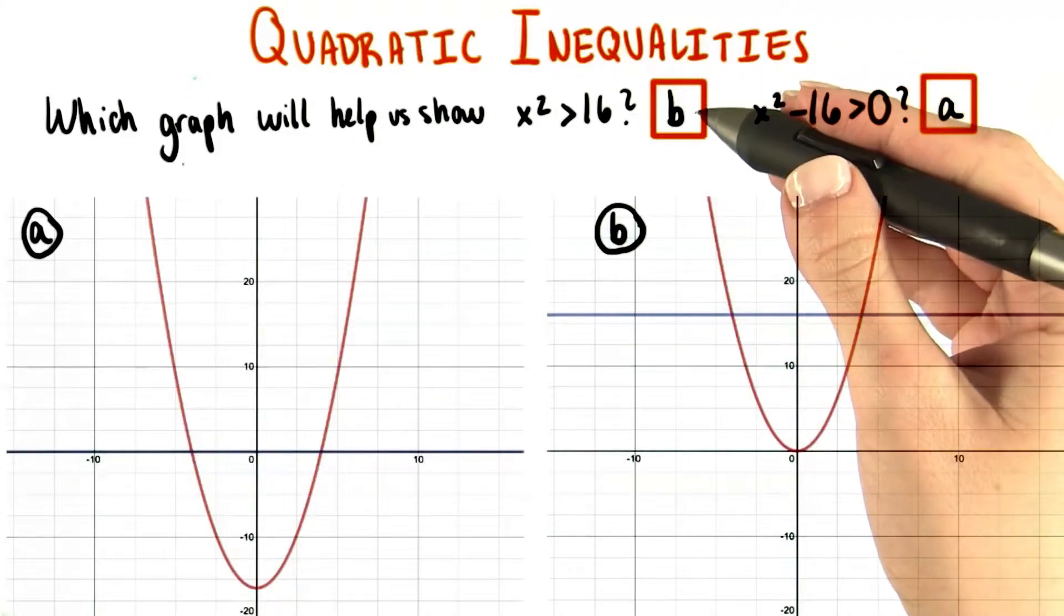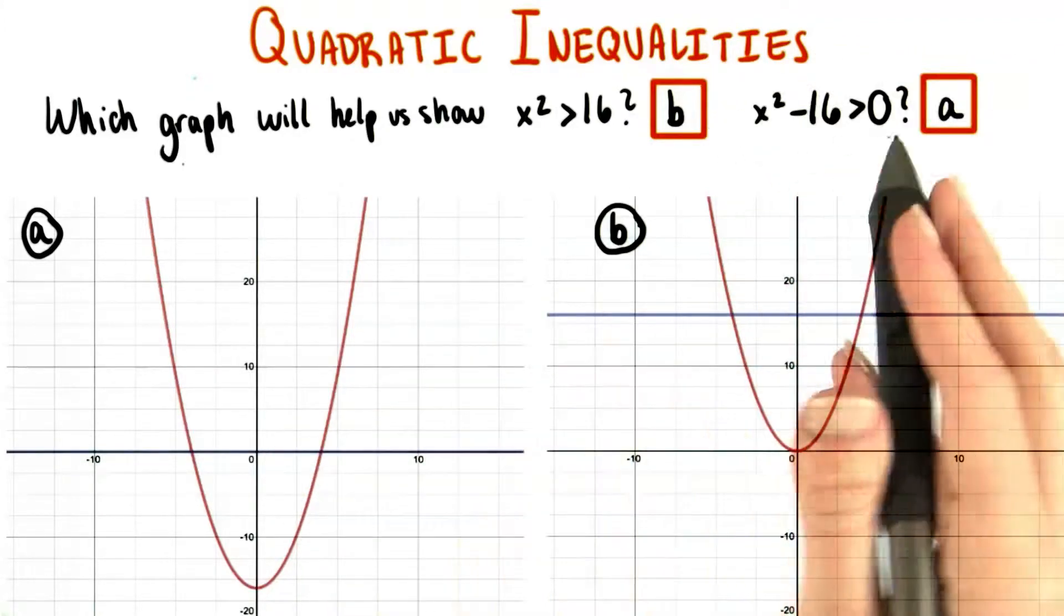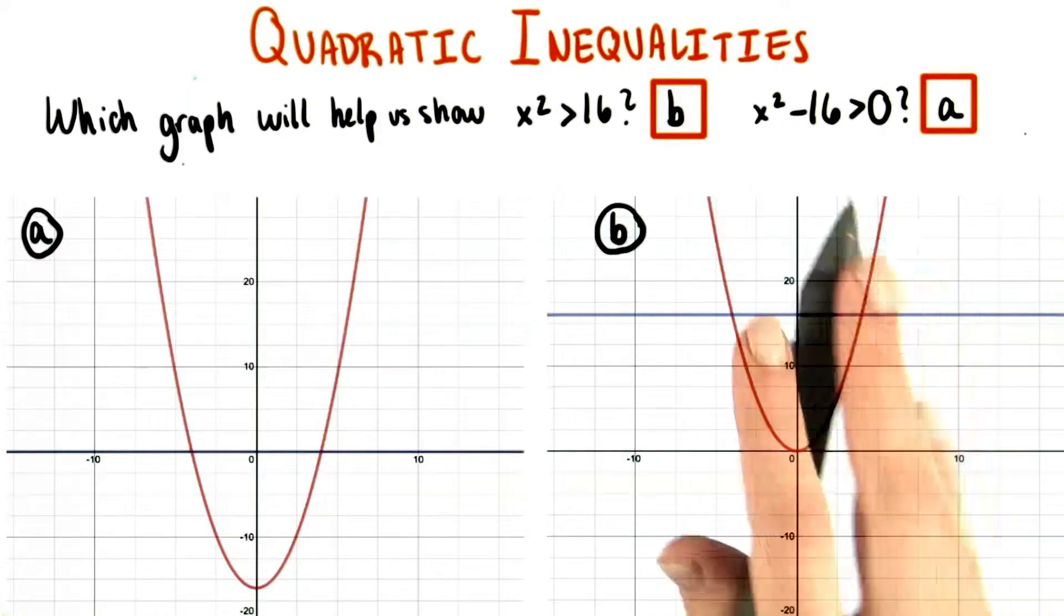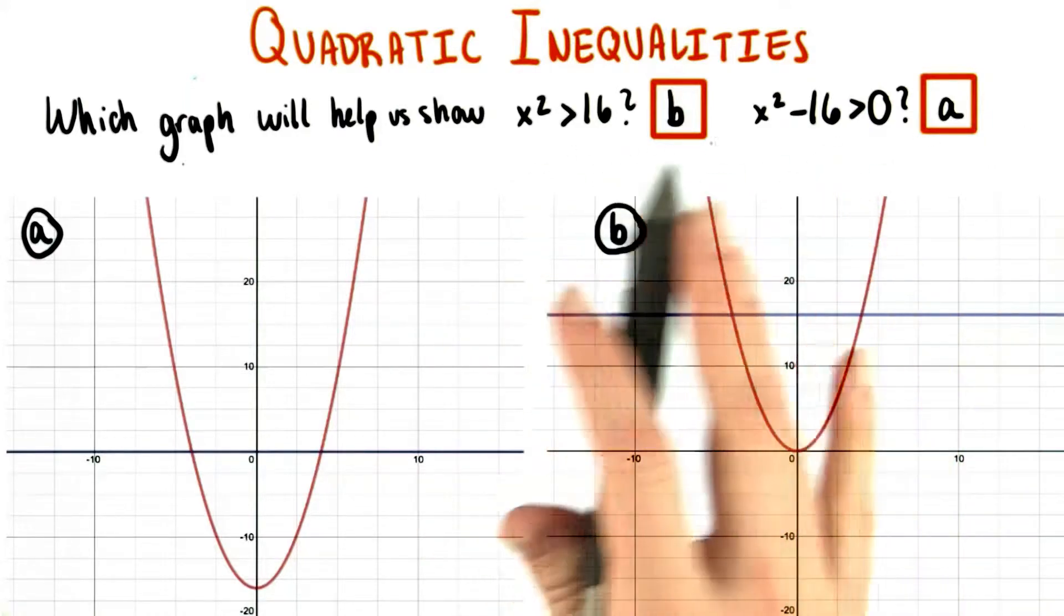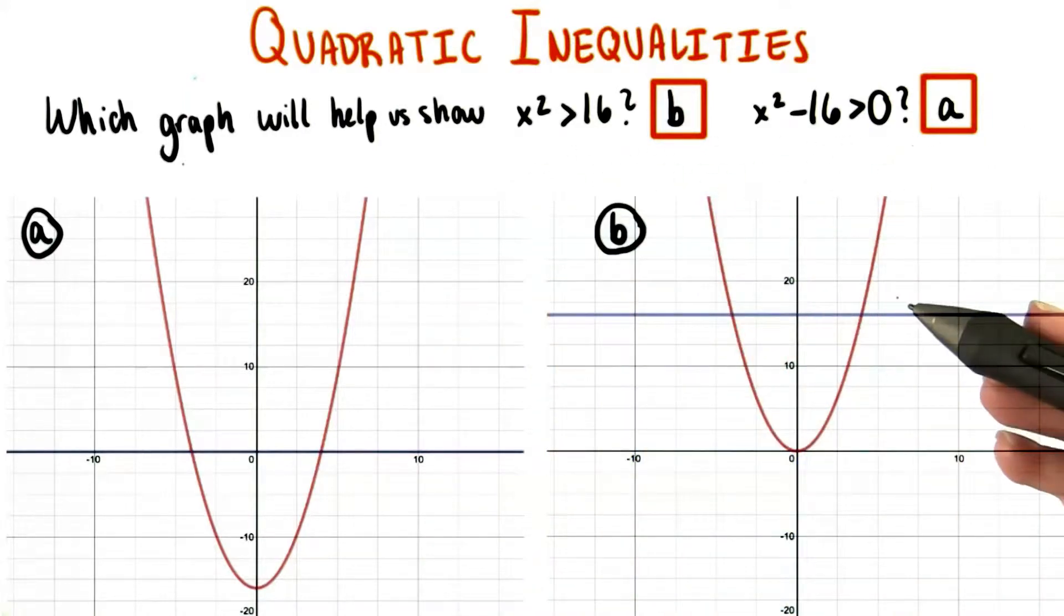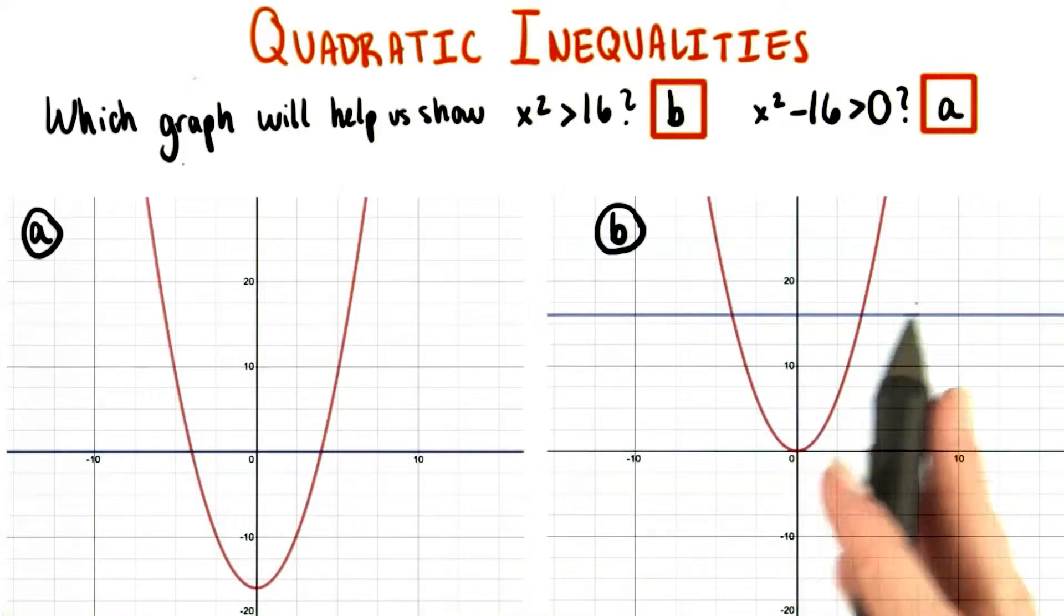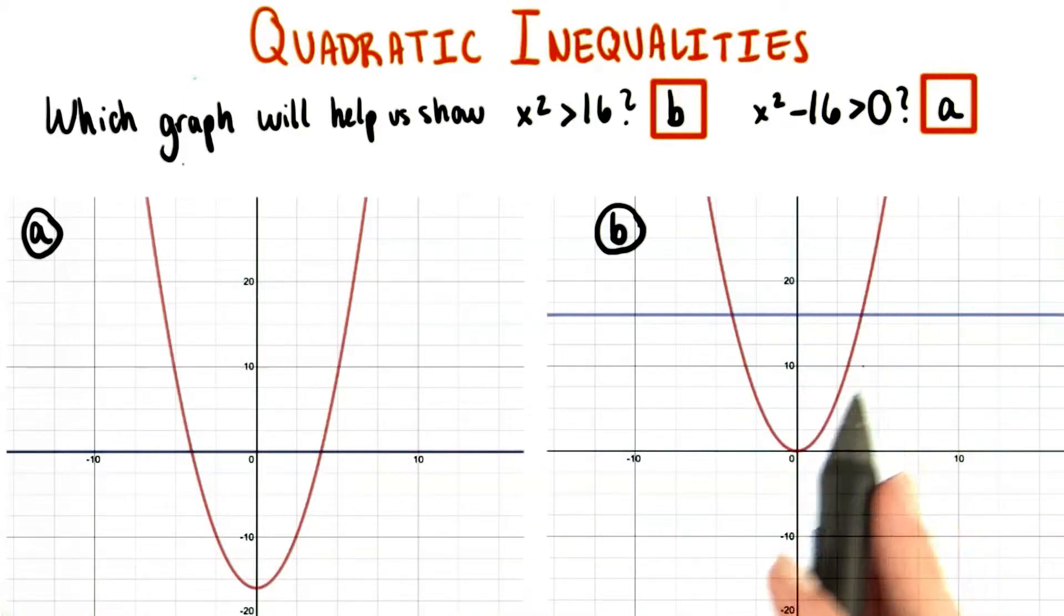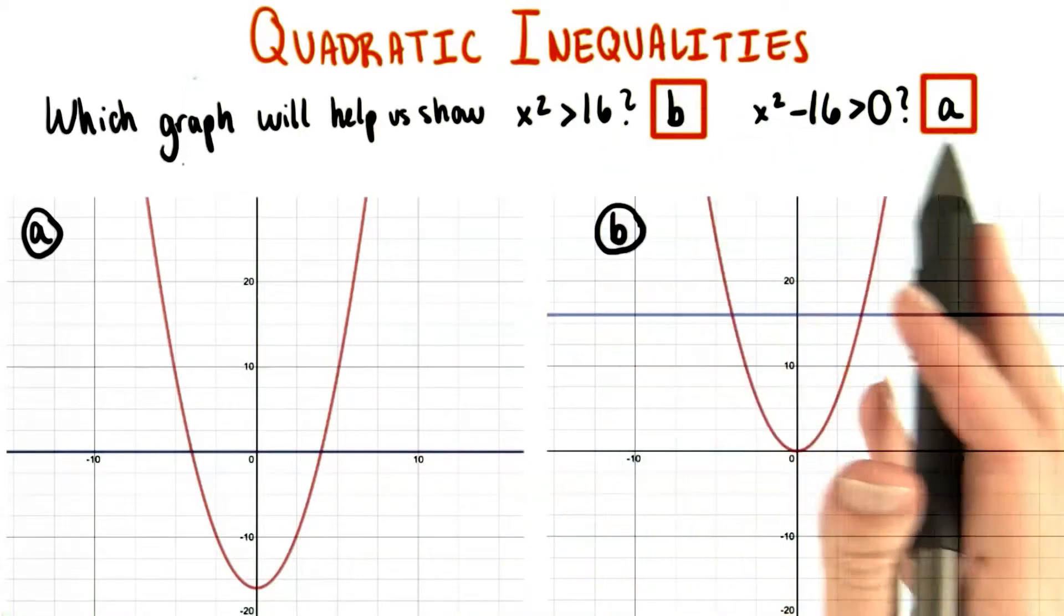Graph B can help us visualize the first inequality, and graph A can help us visualize the second one. Now we're not totally there yet in terms of the actual inequalities themselves, but at least in both cases, we now have the curves and lines graphed that we need in order to show these inequalities on the graphs.